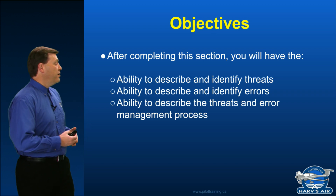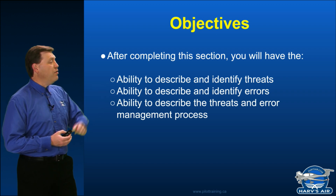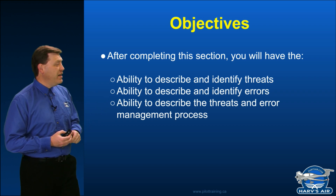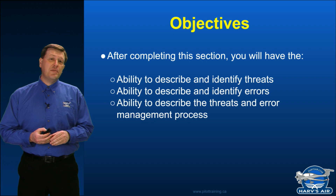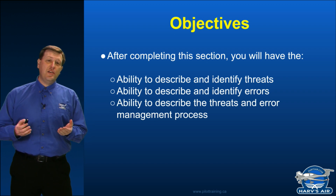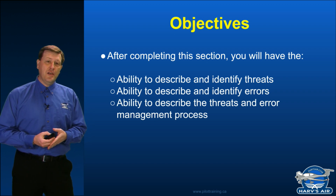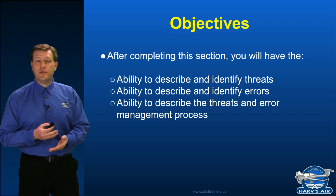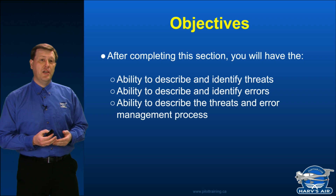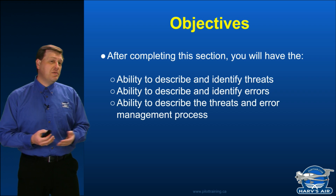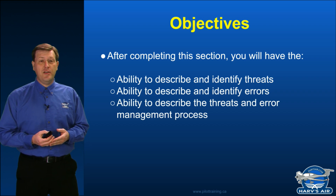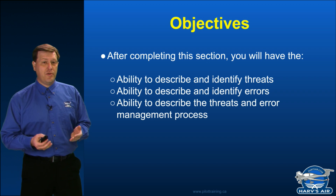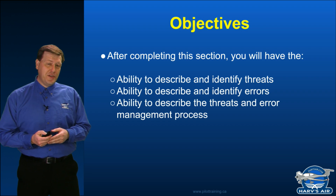Going through this section, we're going to learn about how we can identify threats, how we can identify errors, and we're going to go over some of the methods and strategies that we can use to reduce those. Some of those strategies may well be built into things like checklists or standard operating procedures. However, there are times when we have something anticipated, and in that case we're going to have to design them through our own system of risk management.